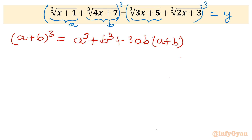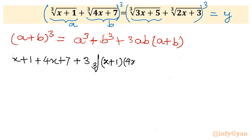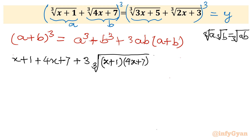Using this identity on the left-hand side: a³ + b³ gives (x+1) + (4x+7). Then 3ab: I will club both cube roots together — cube root of (x+1)(4x+7) — using the property that cube root(a) times cube root(b) equals cube root(ab). In the bracket (a+b) I write cube root(x+1) plus cube root(4x+7). Left-hand side is done.